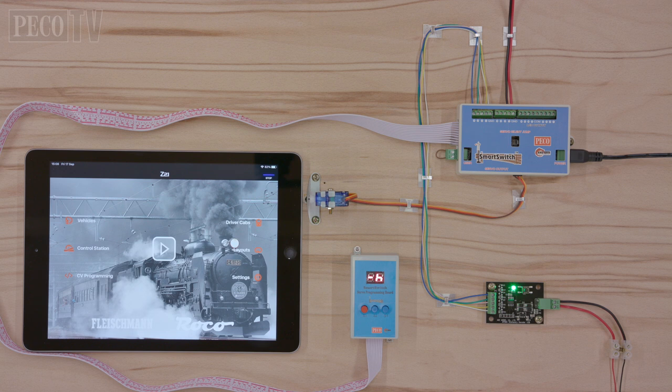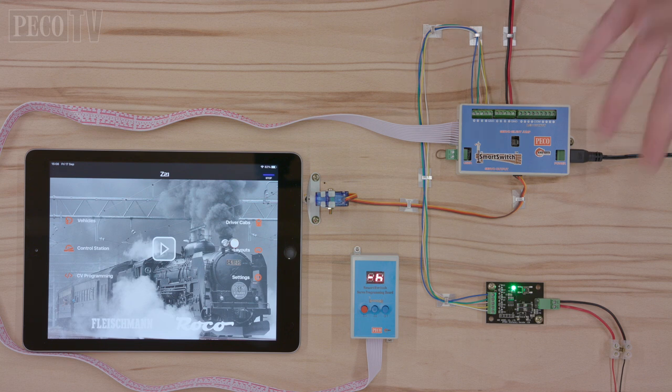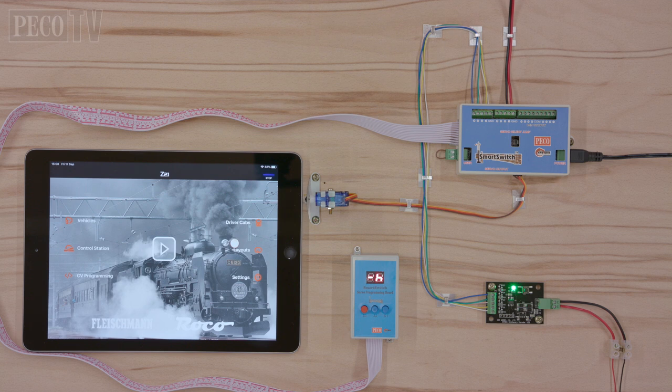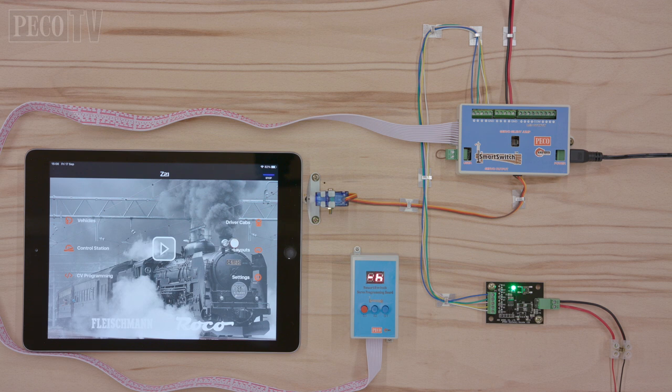Therefore, to avoid ending up with two servos on the same address number, only use numbers that are multiples of four for the addresses of servo four. The range of numbers available for the address is any multiple between four and 2048.